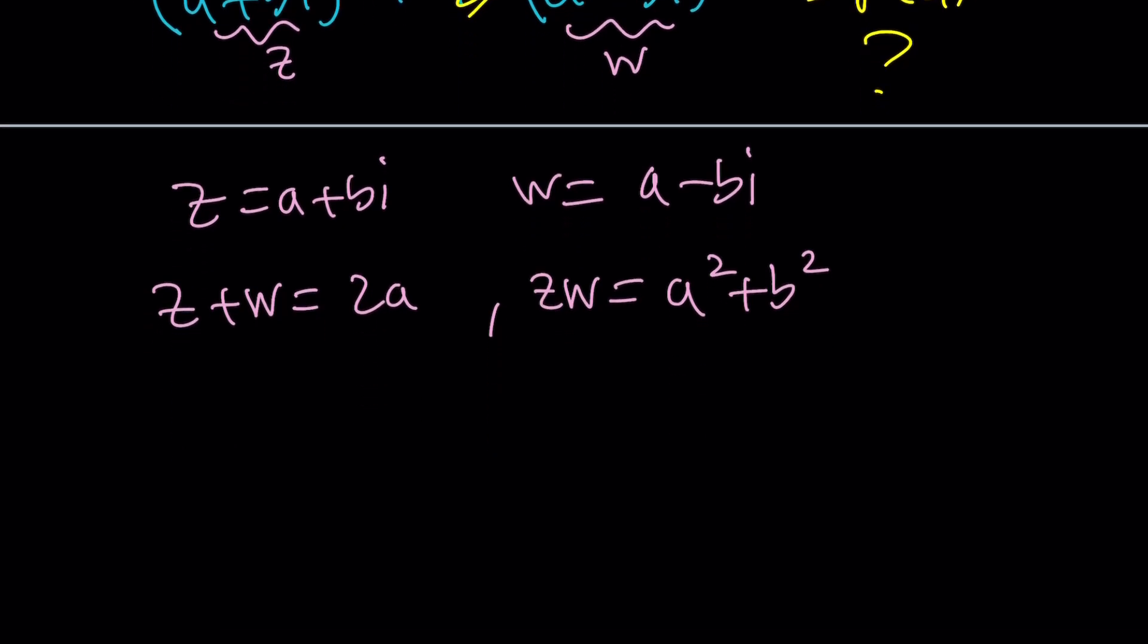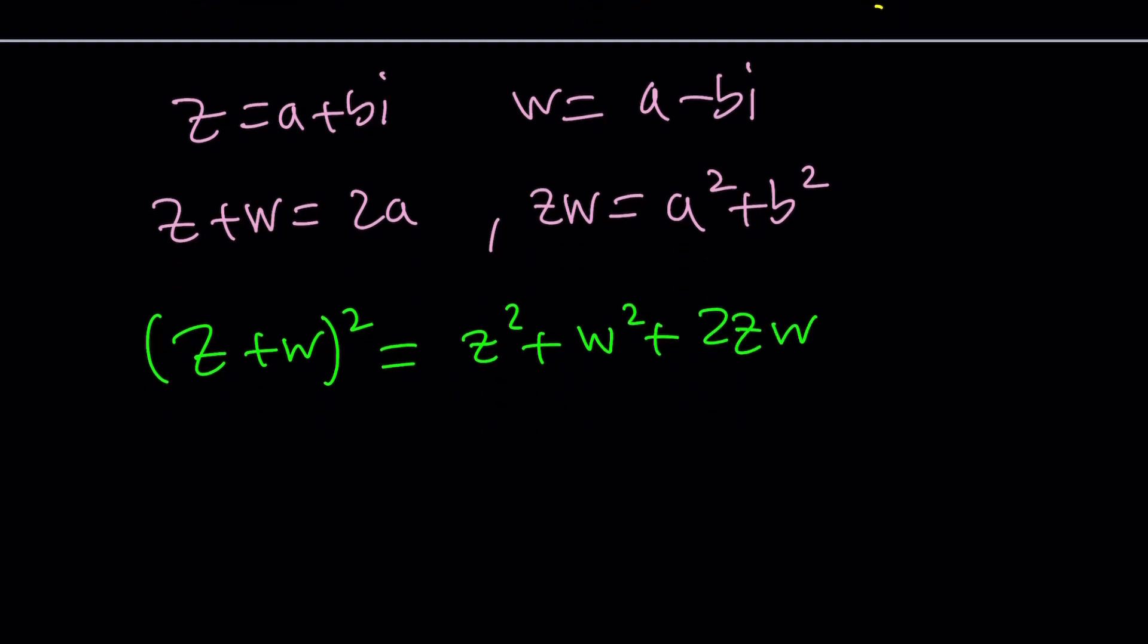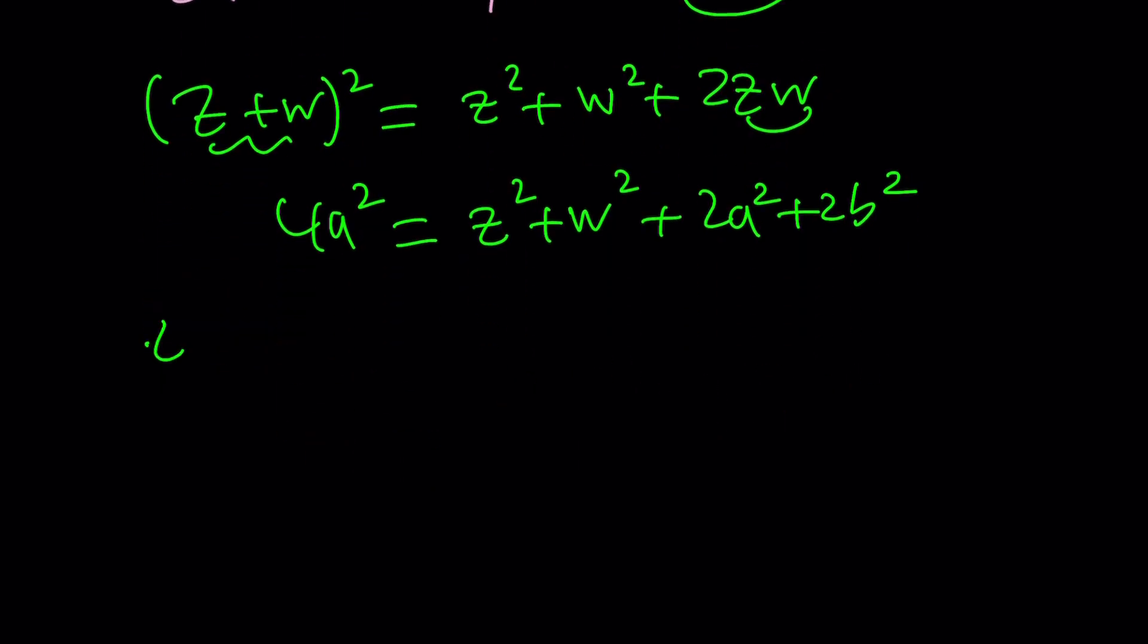Okay, great. So now let's go ahead and do a little bit of algebra here. Let's square z+w which gives us z² + w² + 2zw. But z+w is 2a. So if you square it, you're going to get 4a². And we know zw. So we can write this as z² + w² + 2zw which is 2a² + 2b². And then we're going to isolate z² + w² from here. And when you subtract, you're going to get 2a² - 2b². And of course, that's also going to be real.